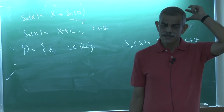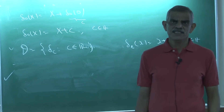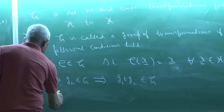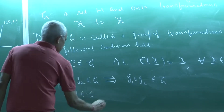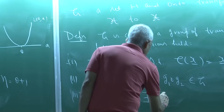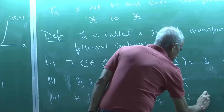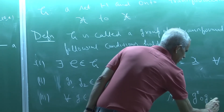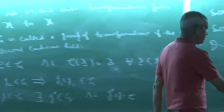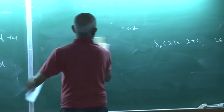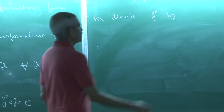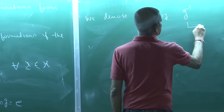The third condition is that every transformation must have an inverse transformation such that G* ∘ G is an identity map. For every G belonging to G, there exists a transformation G* such that their composition is the identity map. We denote G* by G⁻¹ and call this the inverse transformation.